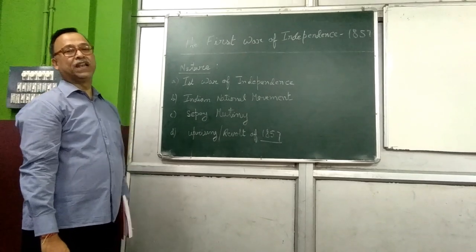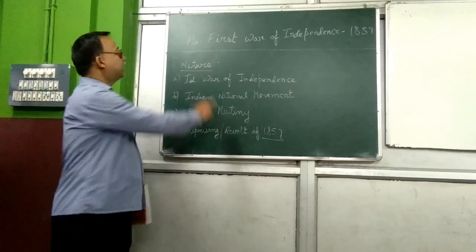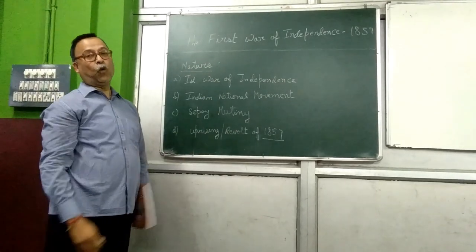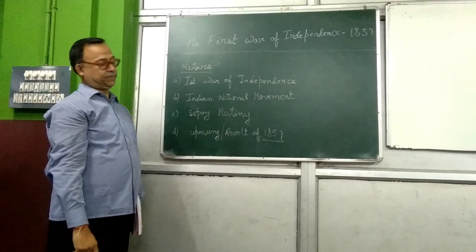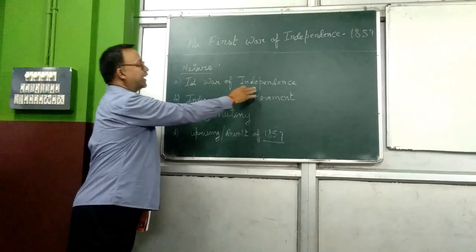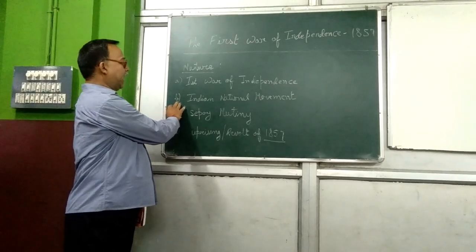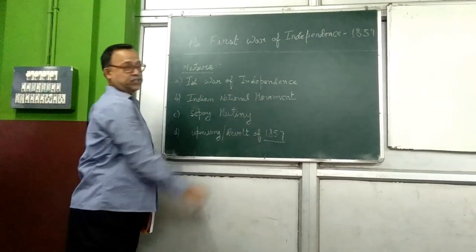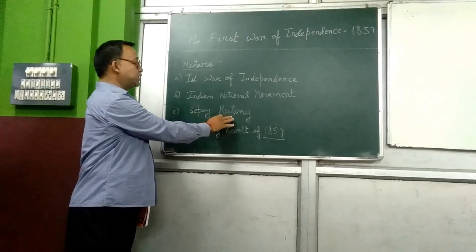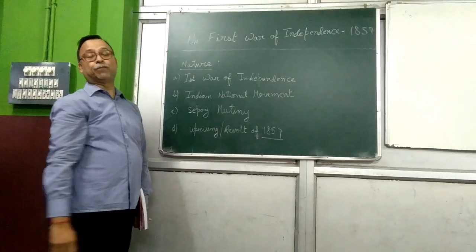Now there are many beliefs, ideas, and theories regarding the nature of this war. Some historians believe that it was the First War of Indian Independence. Some others believe it was an Indian National Movement. There are still some historians who believe it was a Sepoy Mutiny, and of course, a revolt of 1857 or a mass uprising.